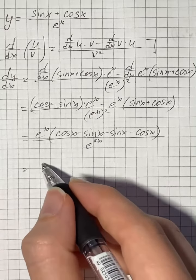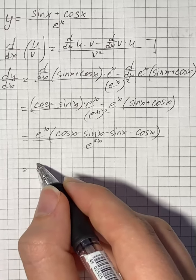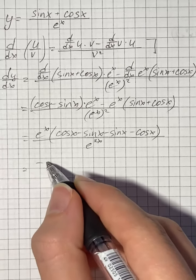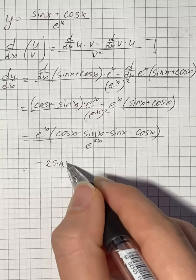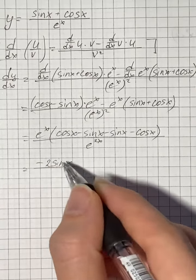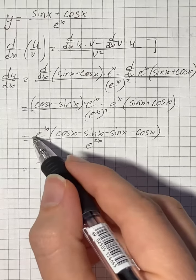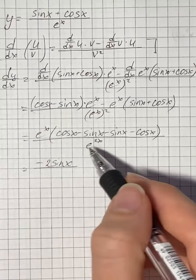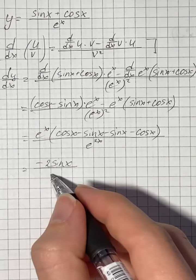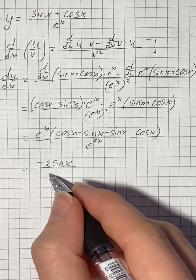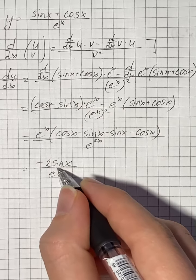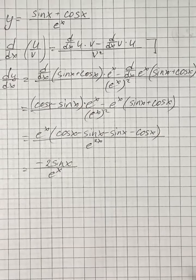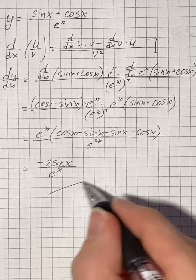So in the numerator we get negative 2 sine of x. Here we can cancel out one e to the power of x, and that's going to be our final answer: negative 2 sine of x over e to the power of x.